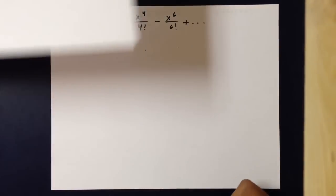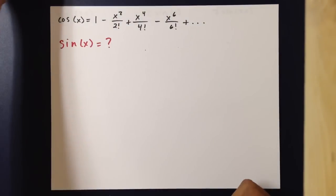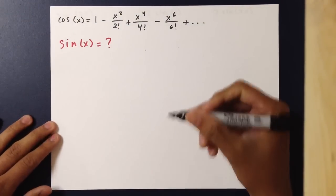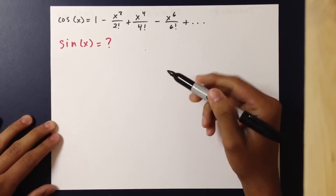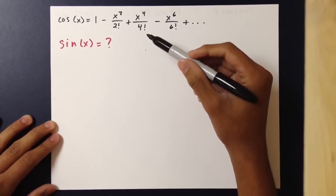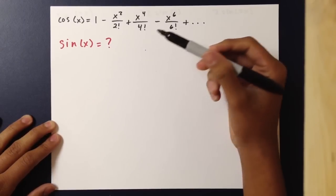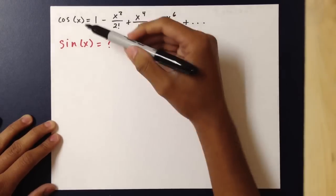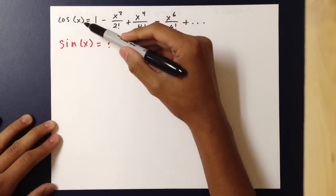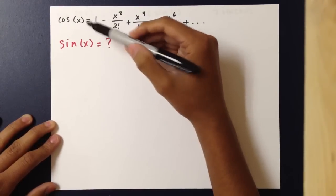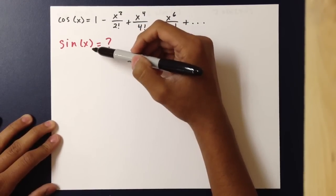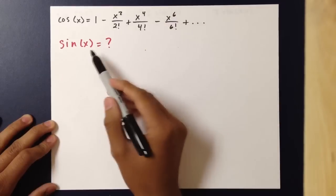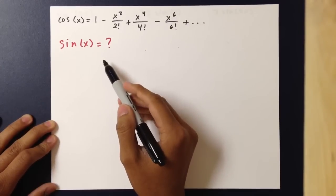We can go the opposite way and take the integral of every single term of the Taylor polynomial as well. Knowing that the integral of cosine of x is sine of x, we can find the Taylor polynomial of sine of x.